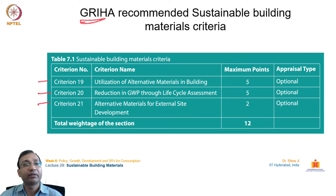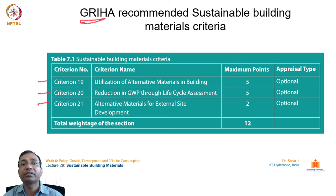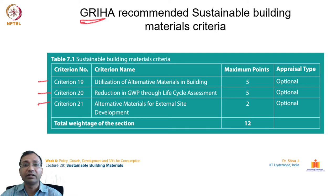The latest GRIHA framework version 2019 has three criteria — numbers 19, 20, and 21 — which talk specifically about material sustainability factors. The first criterion is utilization of alternative materials in the building. We should look for alternative sustainable materials in place of regular materials which are energy-intensive, material-intensive, or potentially toxic in nature. This criterion carries a good weight of five points in the framework.